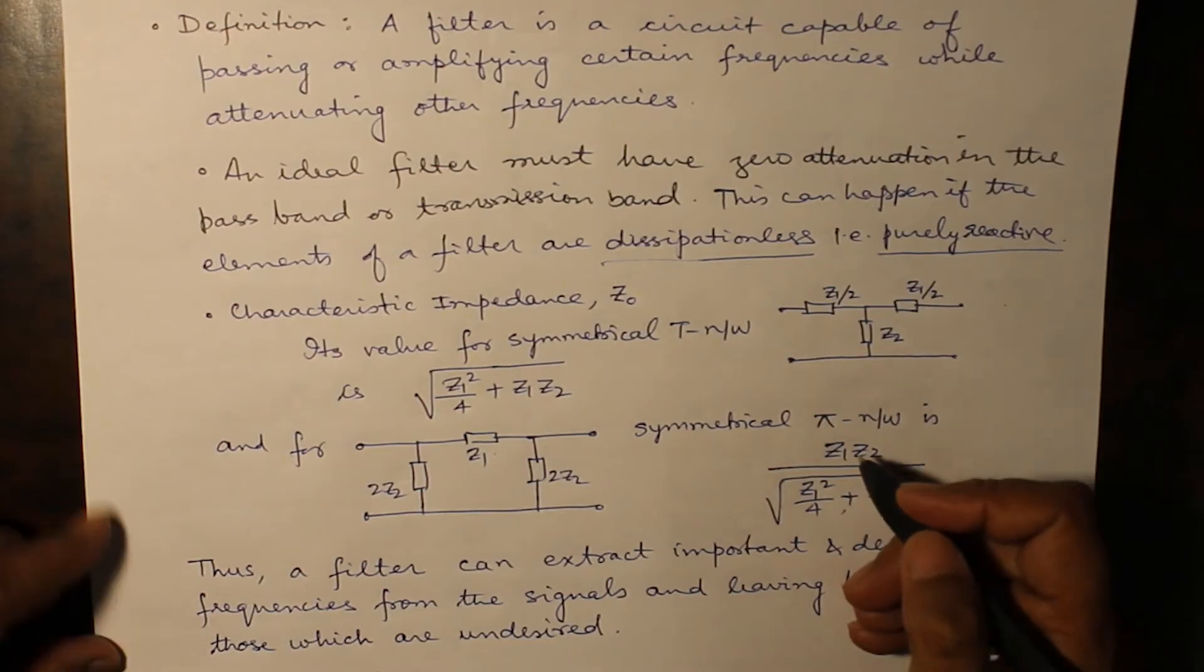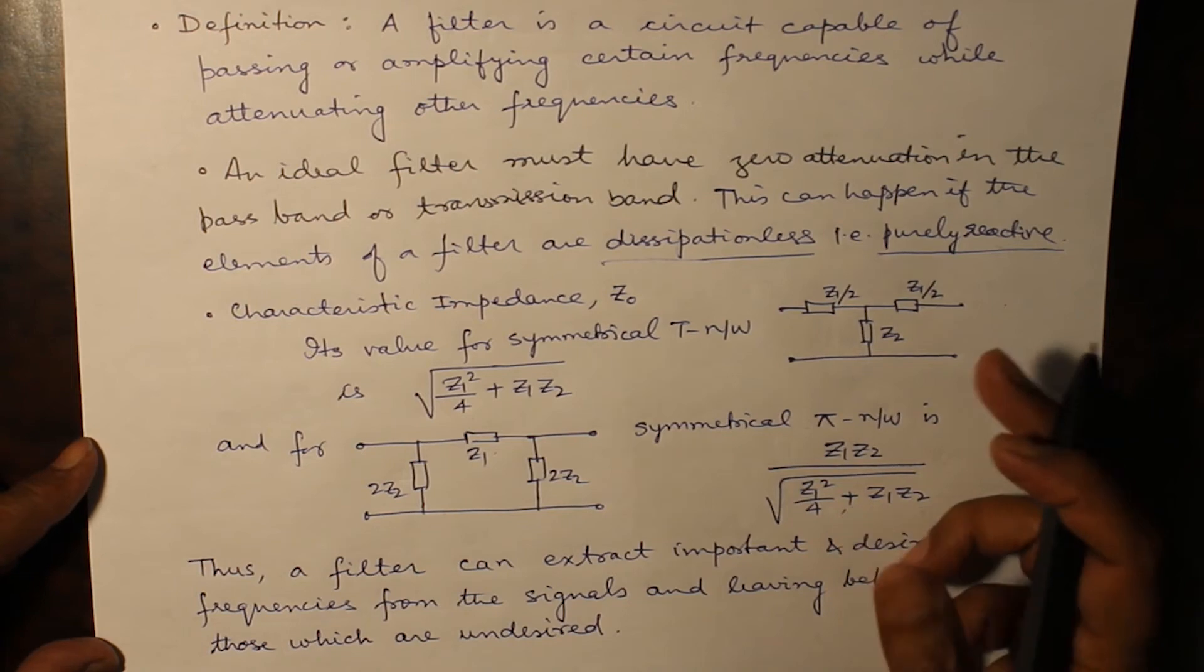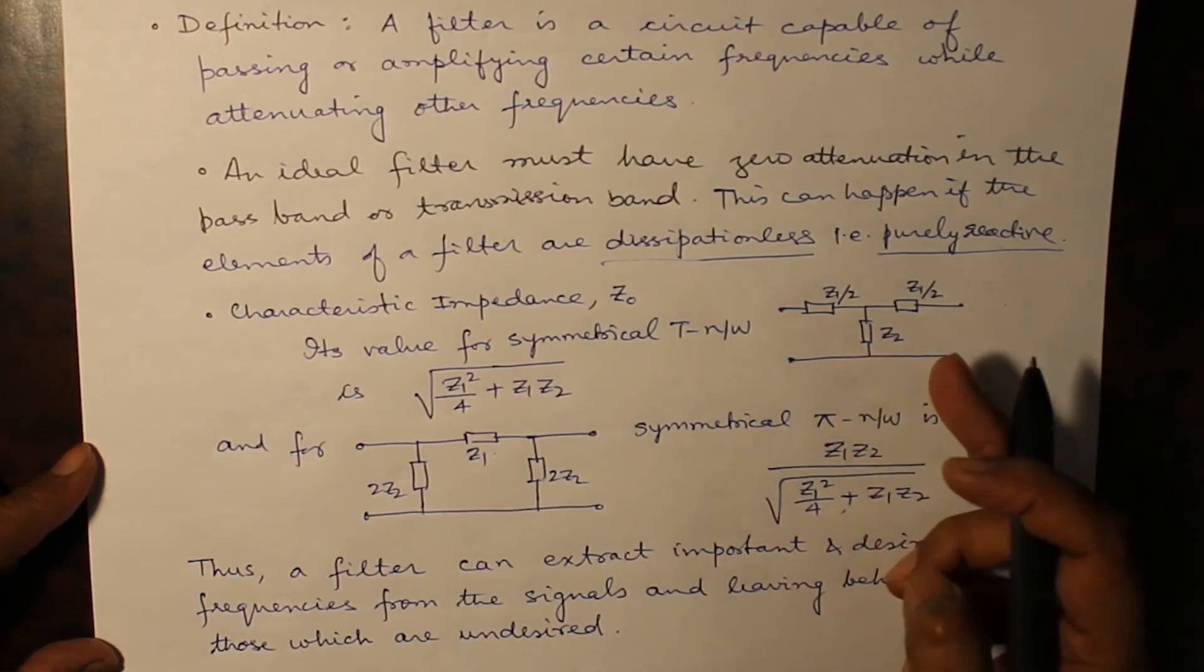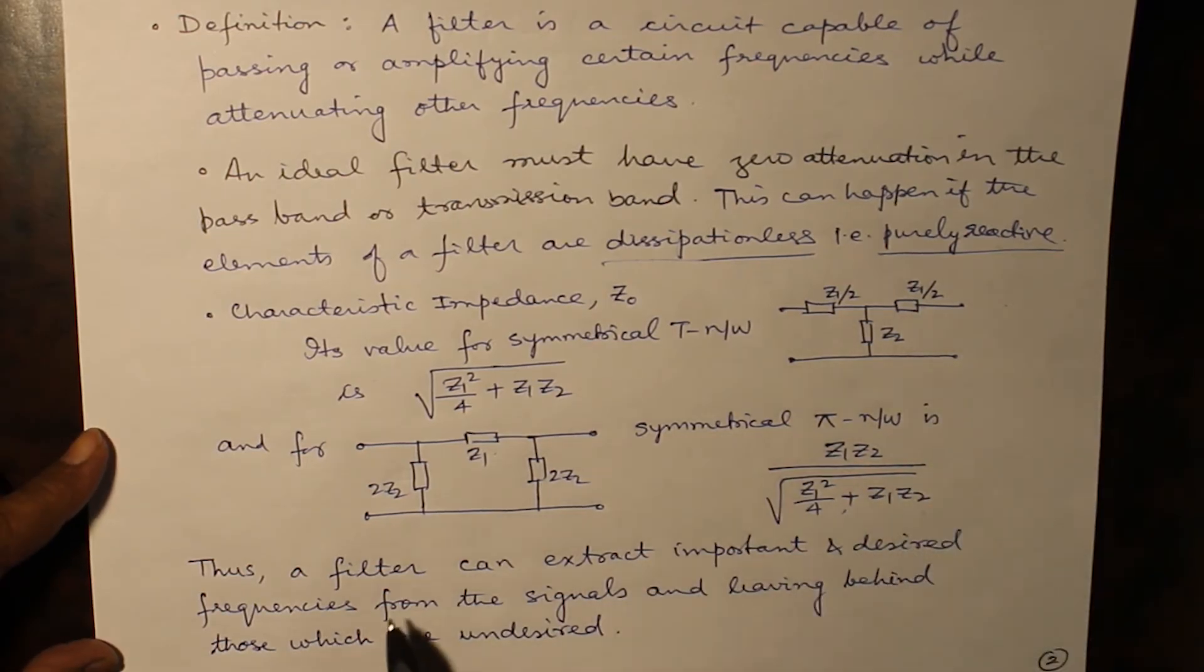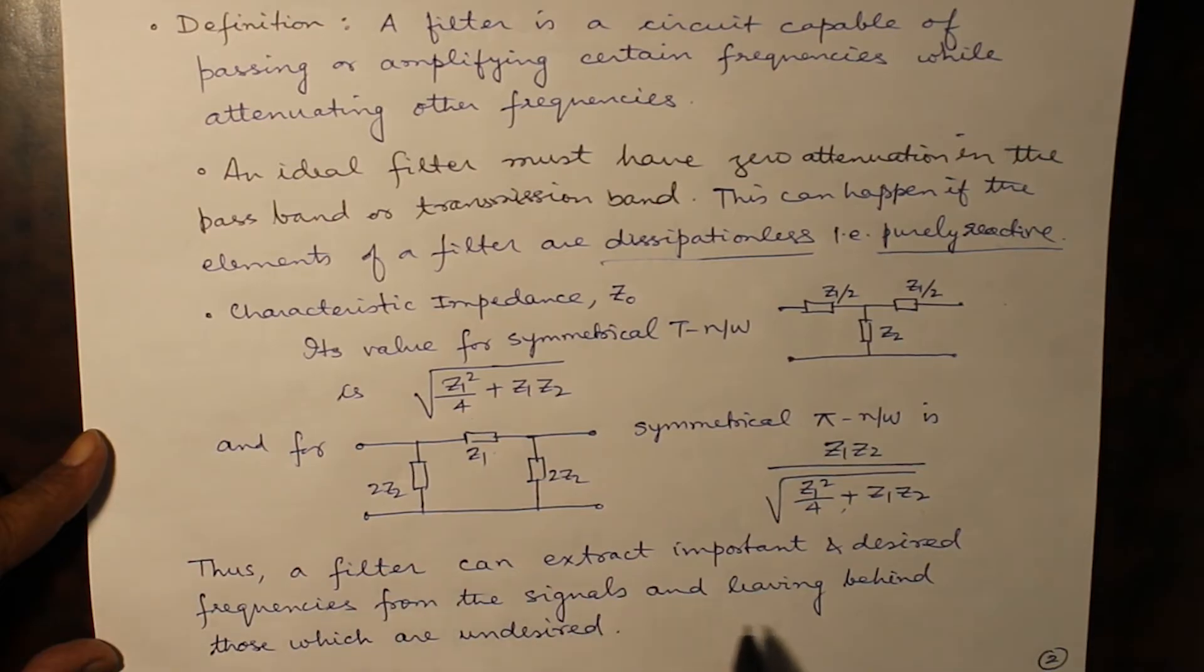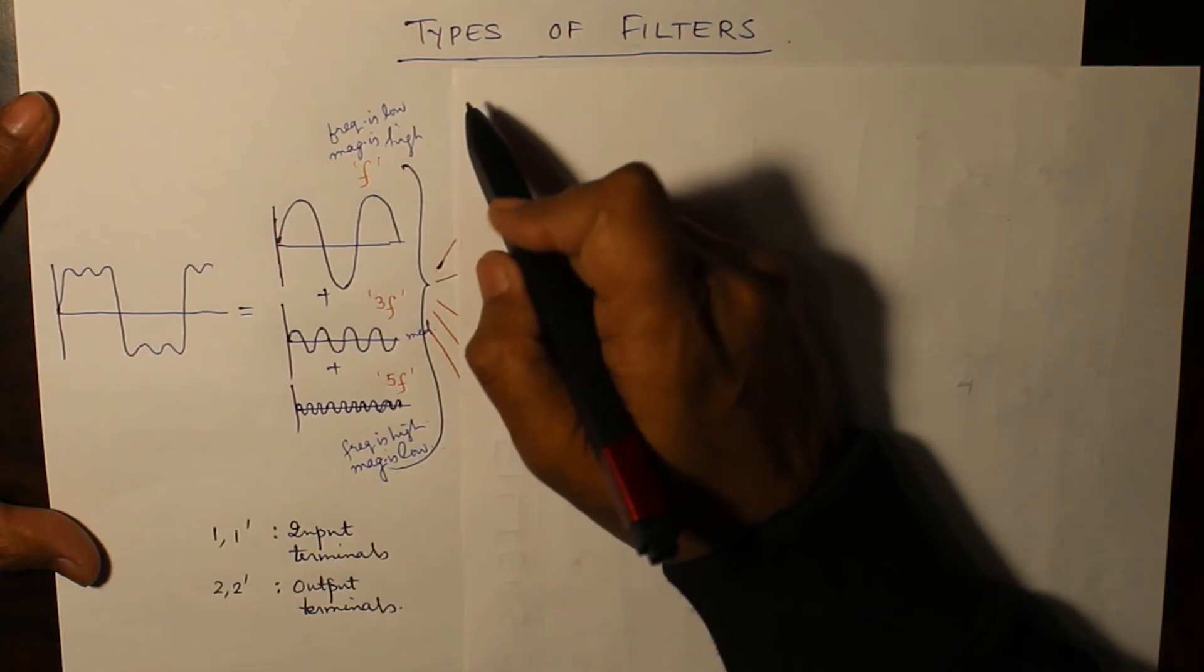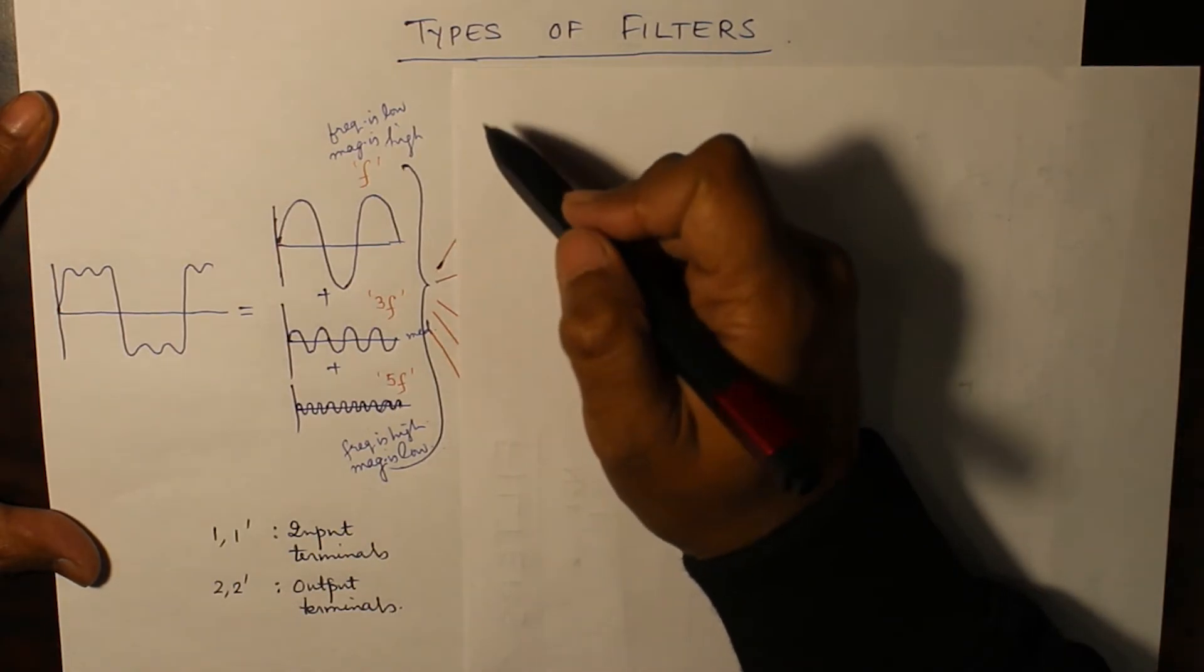Now what does basically a filter do? It extracts some of the important frequencies which are required, which are the desirous frequency, and leaves behind the other frequency. What are the various types of filters? In order to understand that, let's take an example.